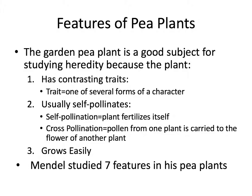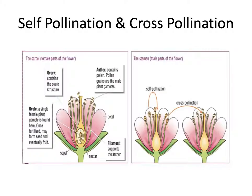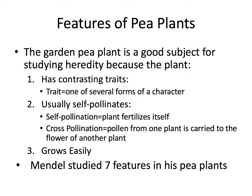The other thing about pea plants is they can self-pollinate and they can also cross-pollinate. Flowers typically have male and female parts. If the pollen from the male part of the plant is used to fertilize the female parts of the same plant, that's called self-pollination. And if the pollen from the male part of the plant is used to fertilize another plant, that is called cross-pollination. The third reason is that pea plants grow easily and quickly, so Mendel could look at many generations in a short amount of time.